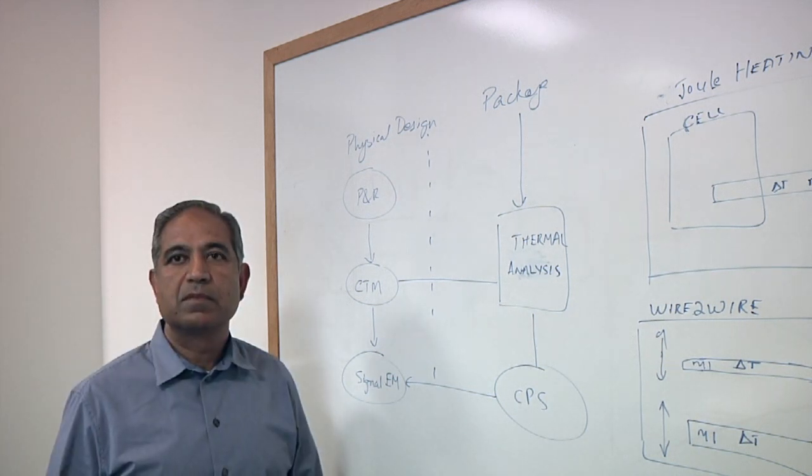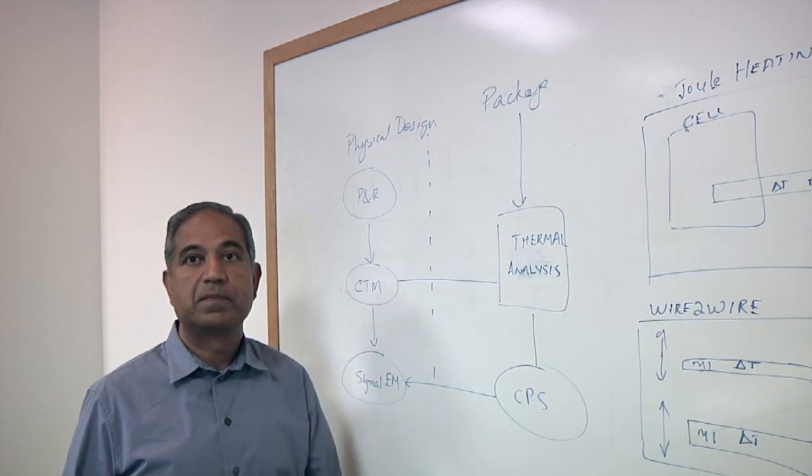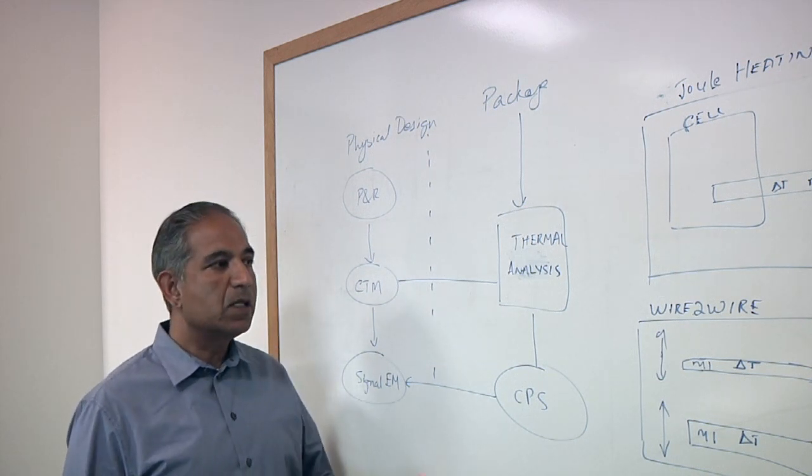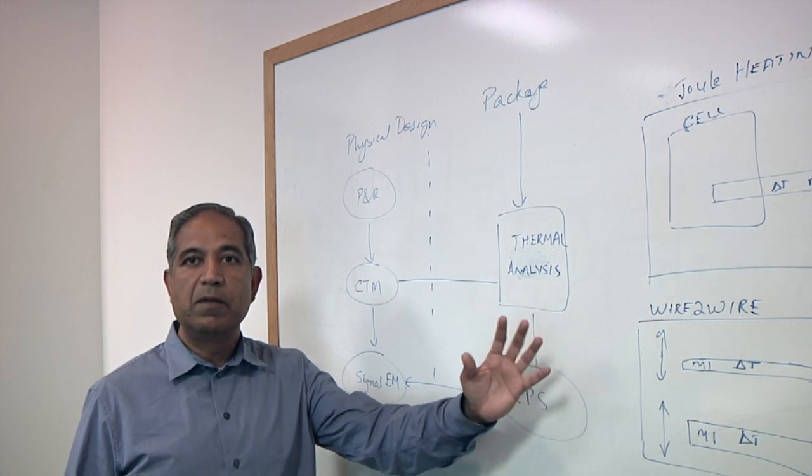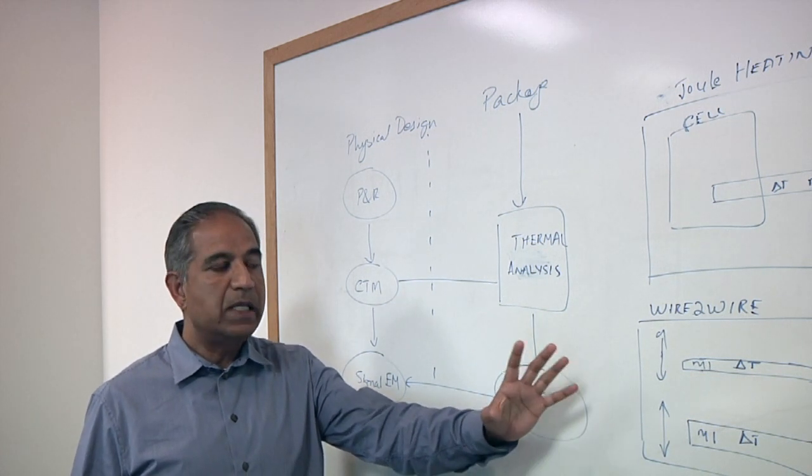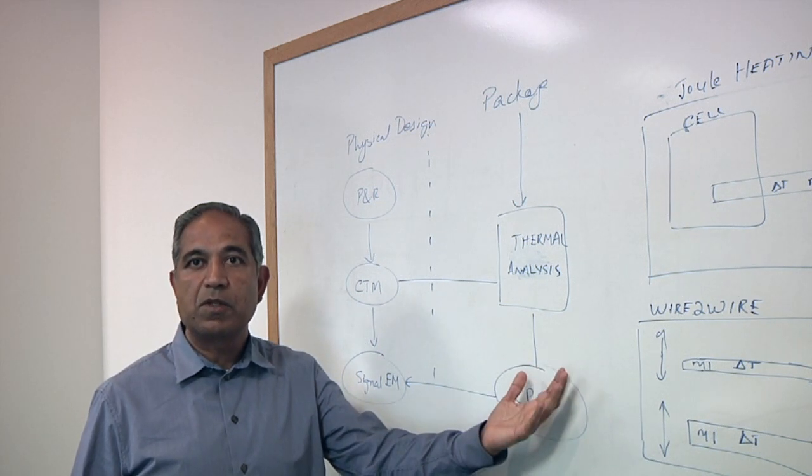So part of this depends upon how good your data is too, right? You really have to have very good data about what you're going to be using, and a lot of that data comes out of the fabs. That's correct. The models that we are looking at have been designed with the manufacturing in mind. So these are sign-off-driven models which can be used at any stage of your design.